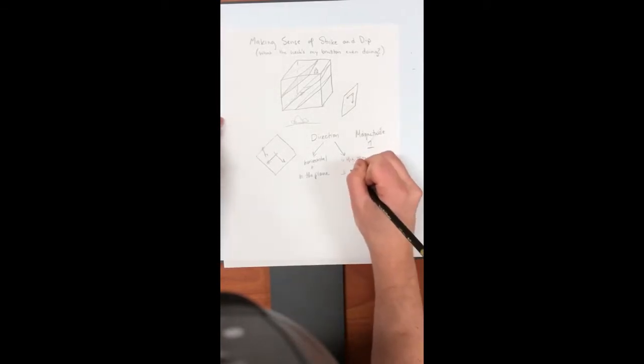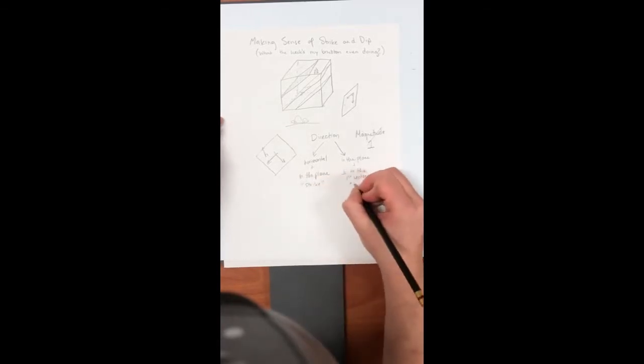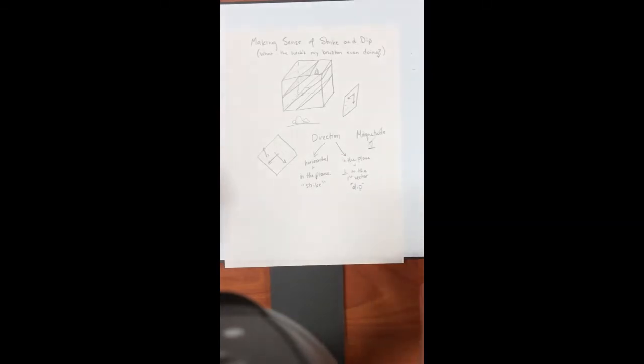So perpendicular to the first vector. So when we want to put these in geologic terms, this one becomes the strike, and this one becomes the dip. So those are actually our two vectors that are defining a plane.